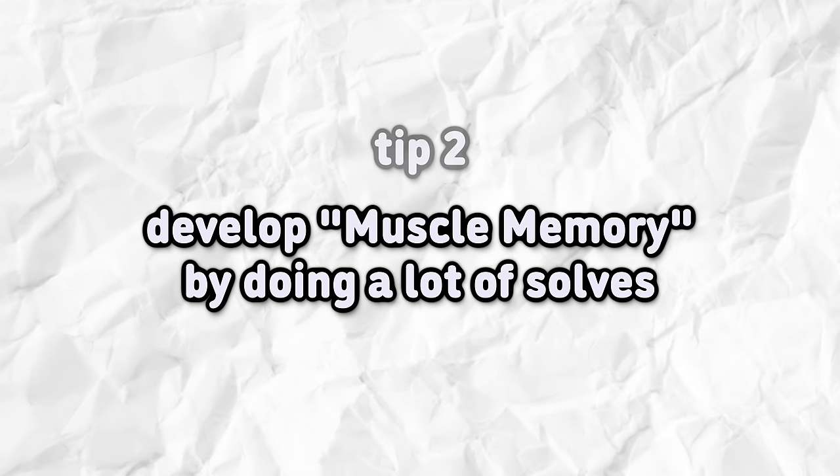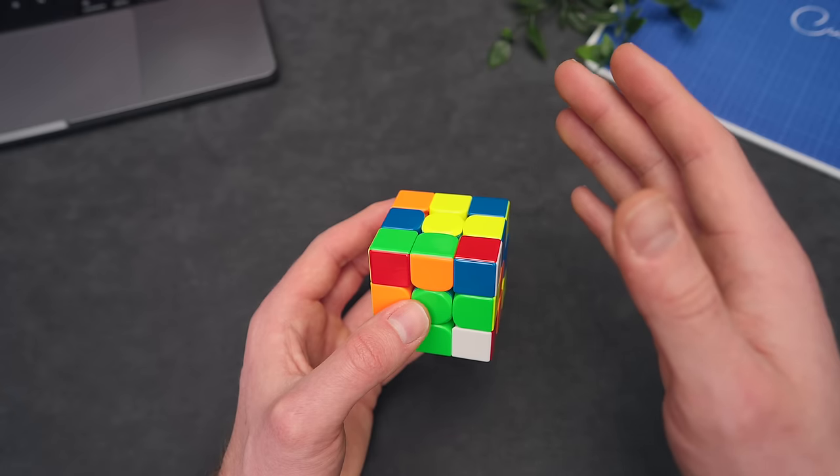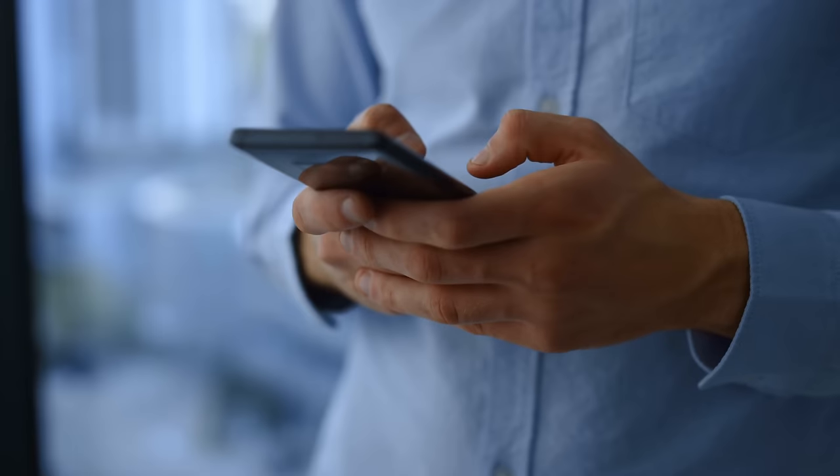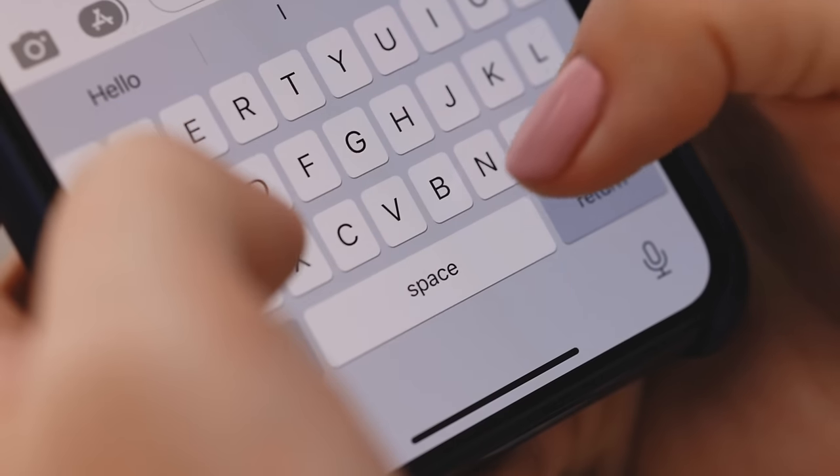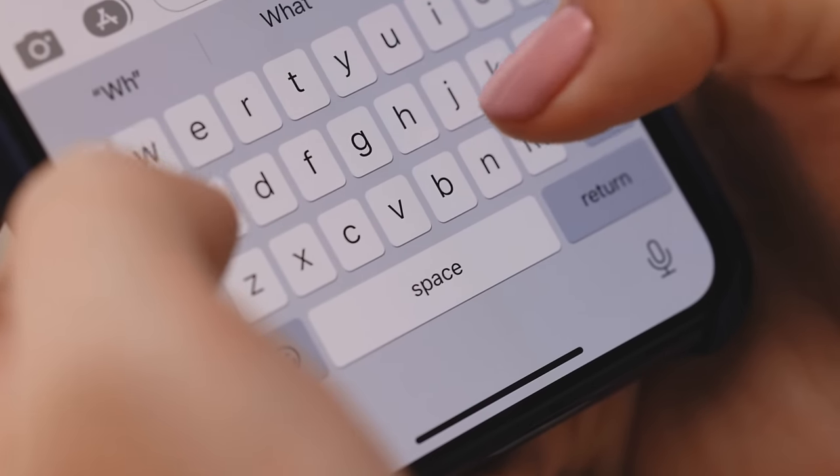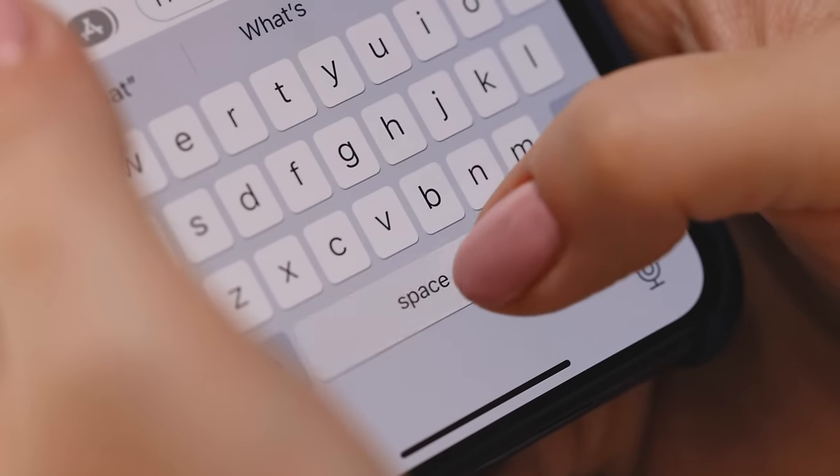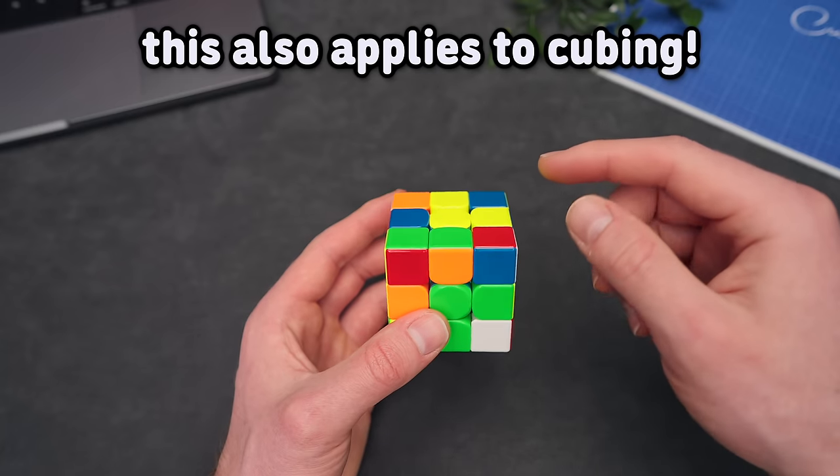Develop muscle memory by doing a lot of solves. To understand muscle memory, try to think of typing on your phone. You don't think about how to place your fingers for each and every letter. You just do those things automatically because you've done them so many times. Now, the same thing is true for cubing.